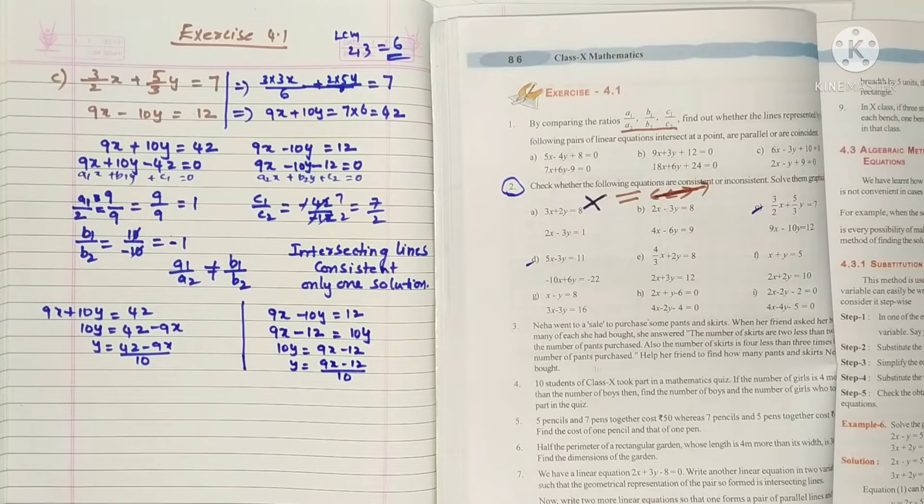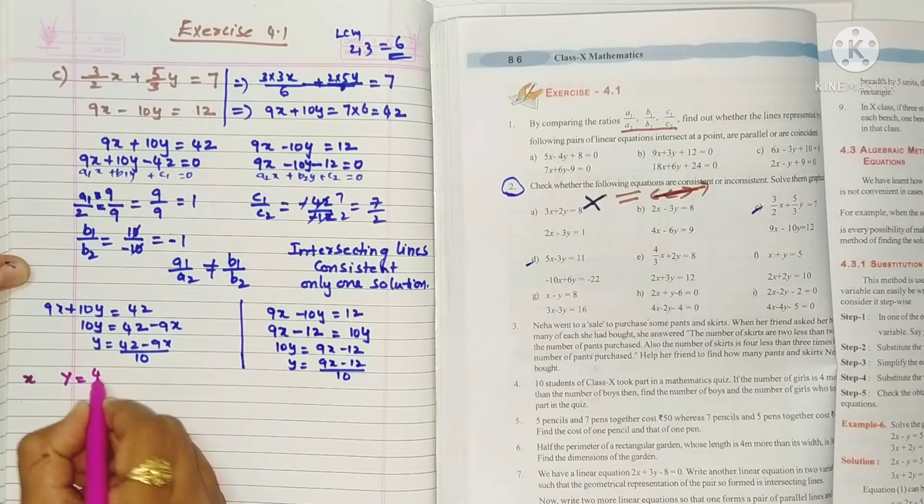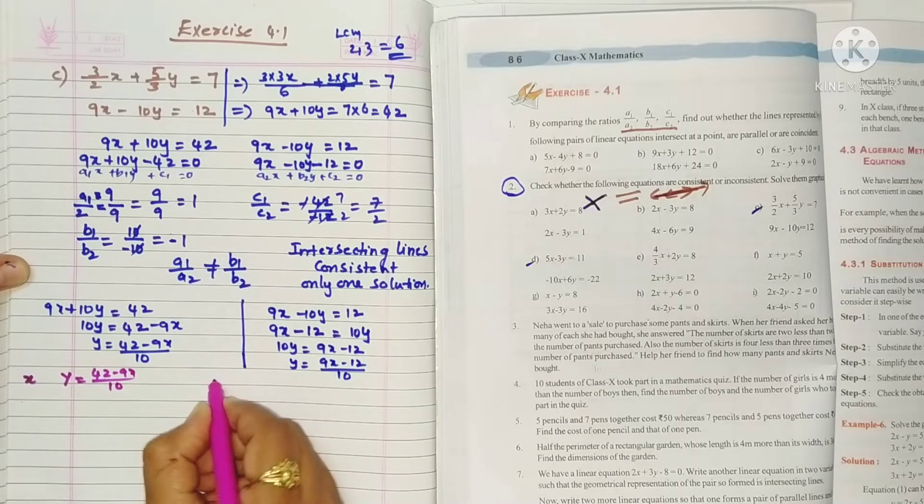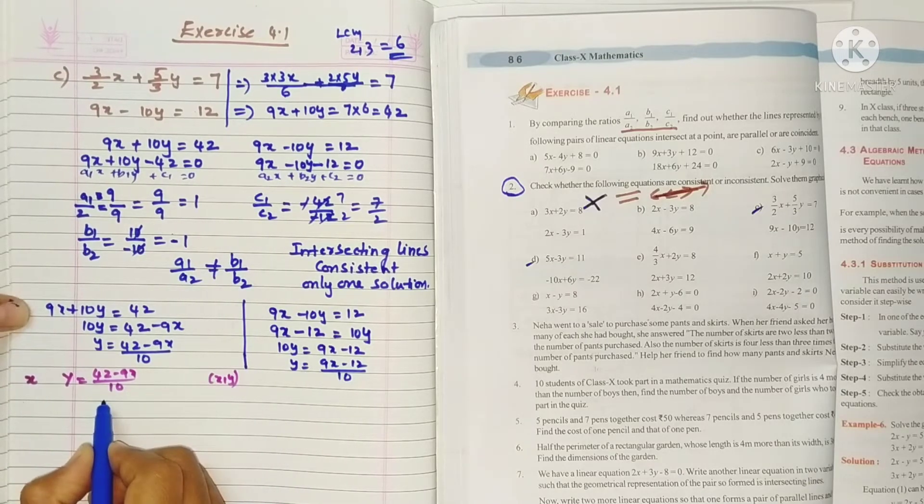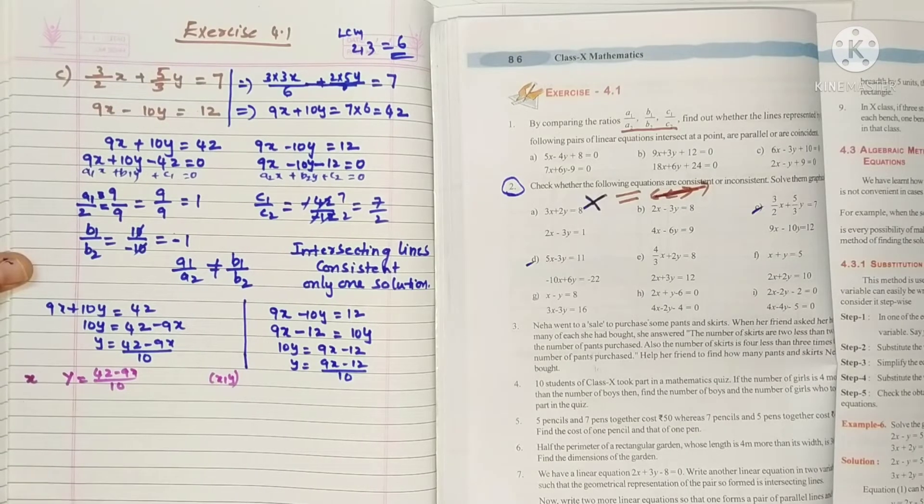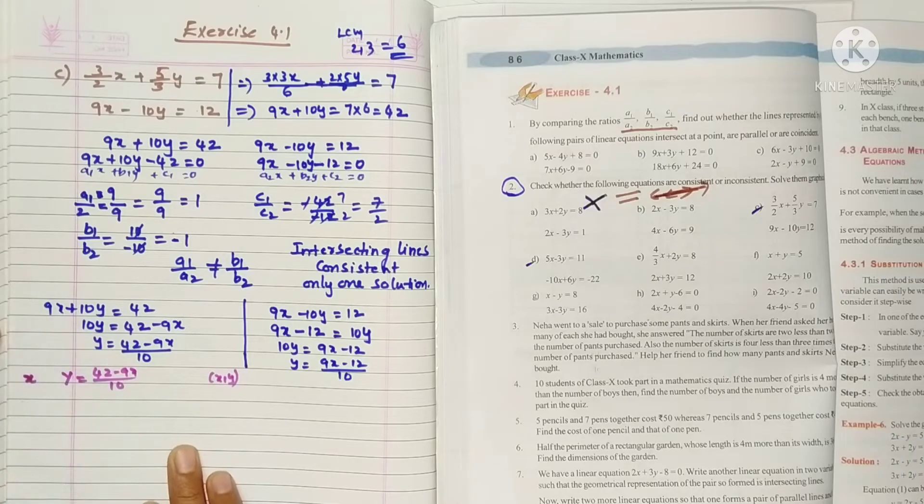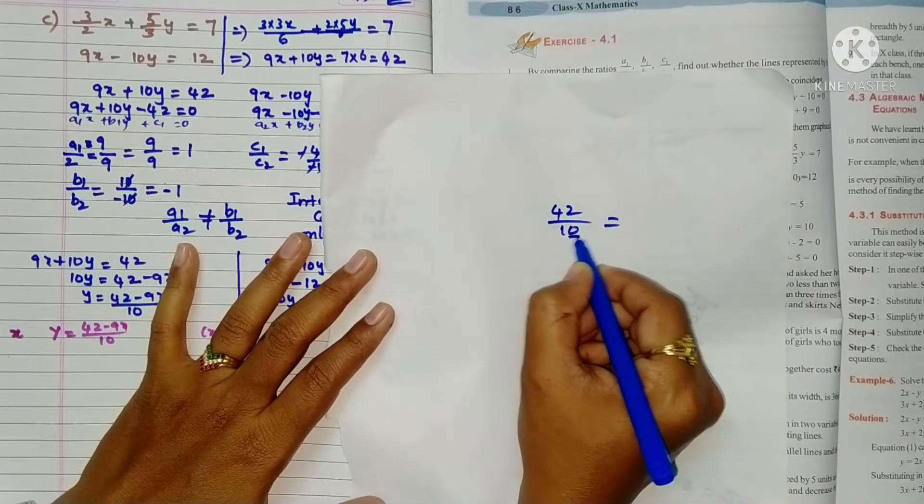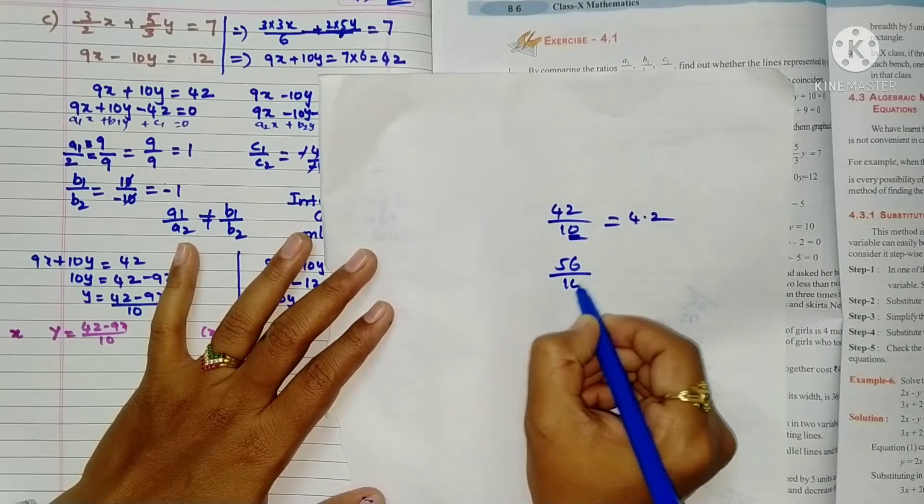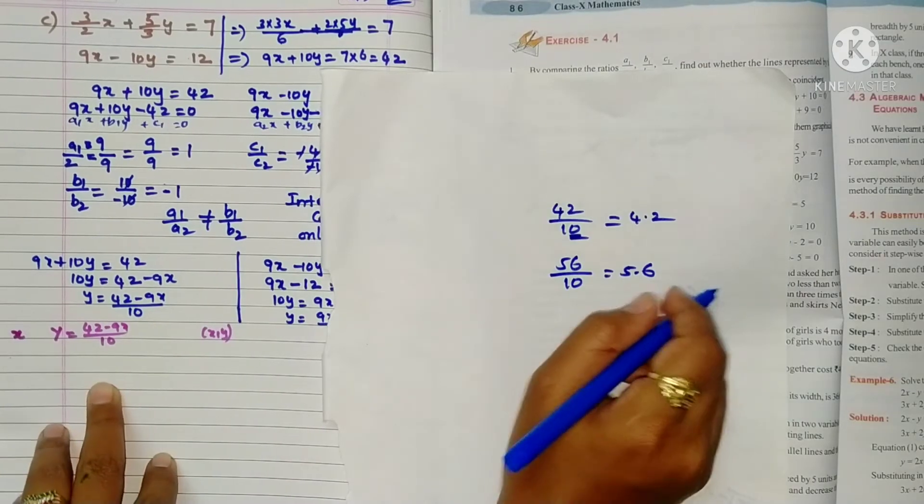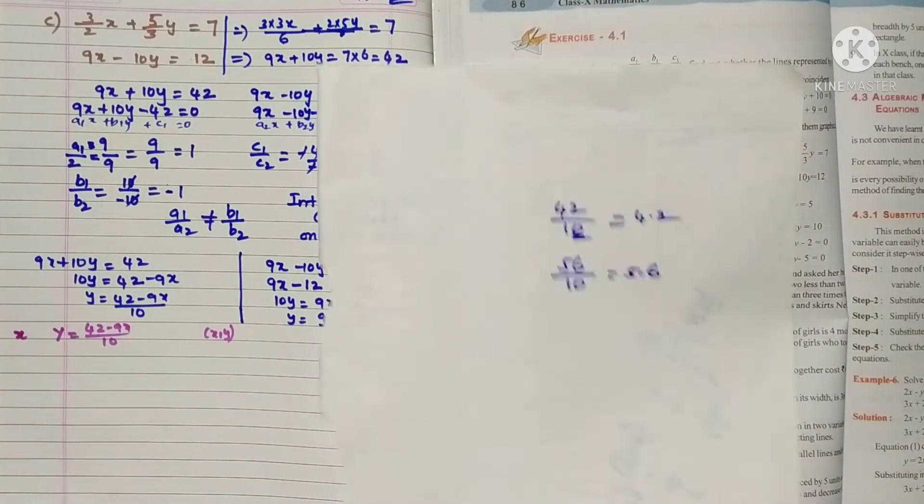Now we want to find out the points. So x and y equals 42 minus 9x by 10. Here in the denominator 10 is there, so we'll take numbers from the right side so that we can get the points. If we take 0, we get 42 by 10, that's 4.2. If we take minus 1, we get 51 by 10, that's 5.1. Division is easy because 10 is there, so we will choose values where division is simple.